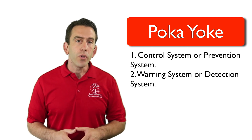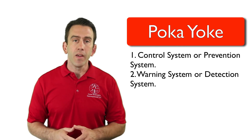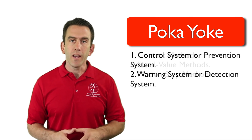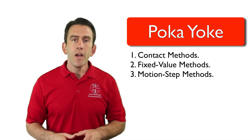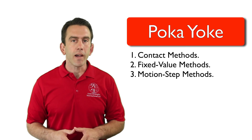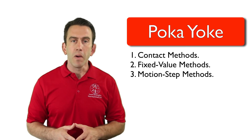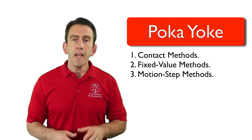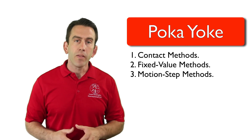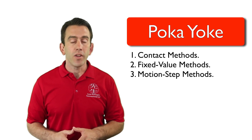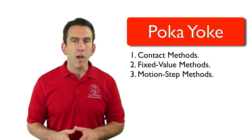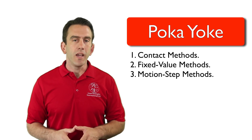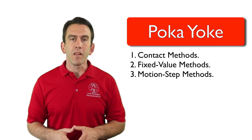Poka-Yoke also uses three different methods to facilitate the control or warning of an error. Those three methods are contact methods, fixed value methods, and motion step methods. Each of these methods is very effective in detecting abnormalities. We will look at each of the methods individually in upcoming lectures.